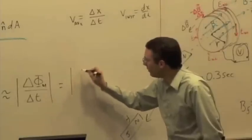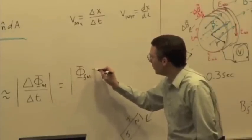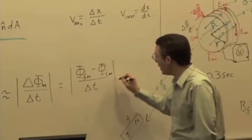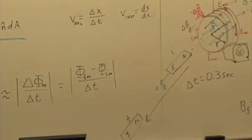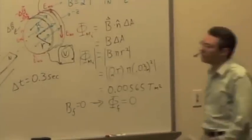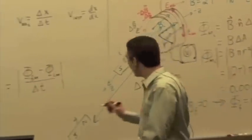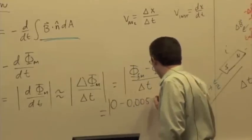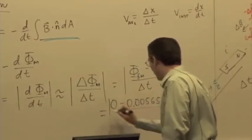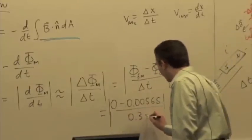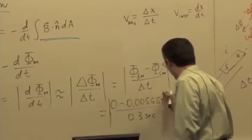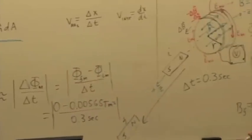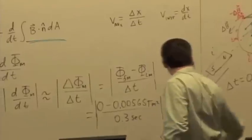Well, this is then going to be the final flux minus the initial flux over the change in time. Final flux was zero. Initial flux was 0.00565. And Δt is 0.3 seconds. So we're just going to get 0.00565 divided by 0.3, which gives us 0.0188.